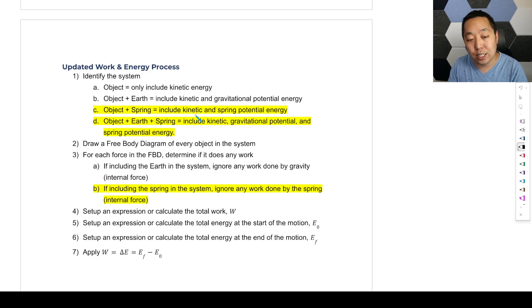So if we include the spring, we include kinetic and spring potential energy. If we include the earth and the spring, then we have the most complicated scenario. We have kinetic energy, gravitational potential, and spring potential energy in our system. And just as a reminder, if you're including the spring in the system, we ignore any work done by the spring because it is an internal force. We have made it part of our system. Everything else in our process is identical. There's no difference in how we treat anything else.